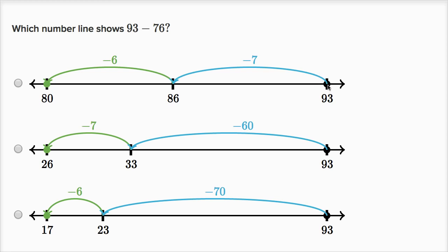Here, in this first choice, we subtract 7 and then 6. But if you're subtracting 76, you want to subtract 70, and then you want to subtract 6. Not just 7, so I don't like this first choice.